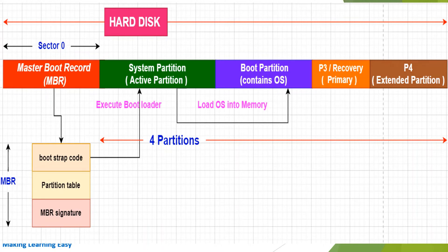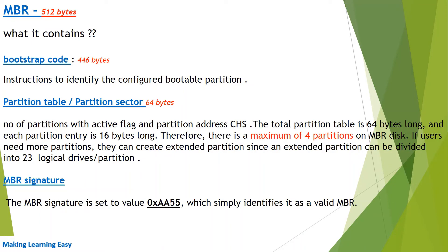We will see those in the next slide. The size of the Master Boot Record is 512 bytes. It has mainly three components. First is the bootstrap program, which is the important program that calls the boot loader present in the active partition.